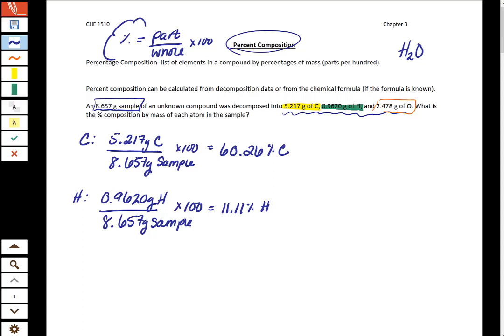Those of you who are mathematically inclined probably see that you can finish up this problem two different ways. I'm going to do the longer route, meaning that I'm going to take the mass of the oxygen that I'm given and I'm going to divide by the mass of the sample and get the percentage.